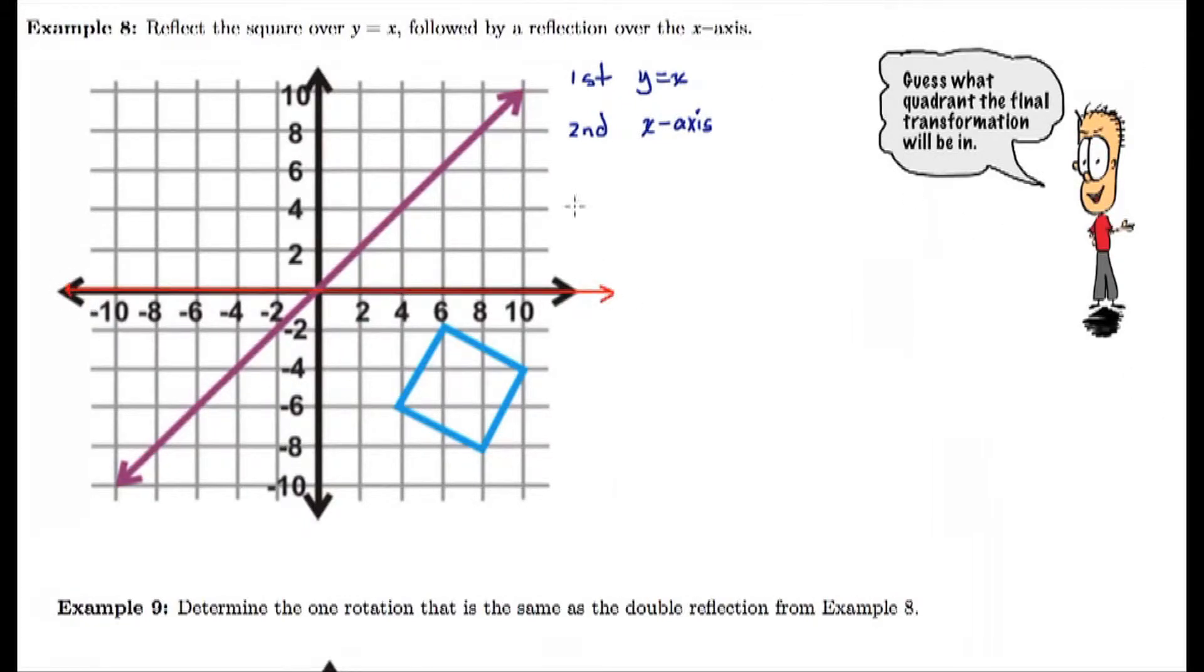So the purple line is showing y equals x, and I need to know what the slope is for that. So the slope is 1 over 1. It's already in y equals mx plus b form, y equals x. So I need to find the perpendicular slope, which is negative and reciprocal, so I know where the reflecting point is going on the other side of the line.